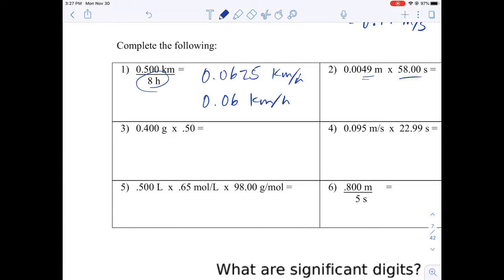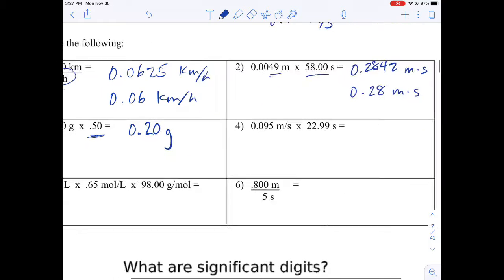But in this case I only have two sig digs and this is four, so my answer should be 0.28 meters times seconds. Here I've got 0.400 times 0.50, so 0.400 times 0.5 will give me 0.2. Now my calculator says 0.2.